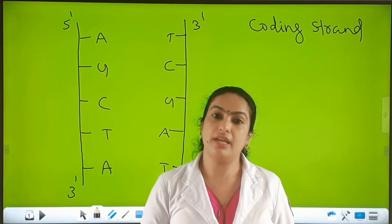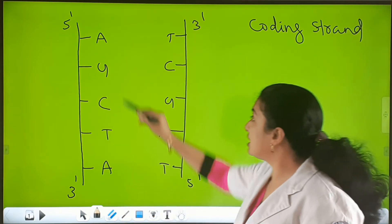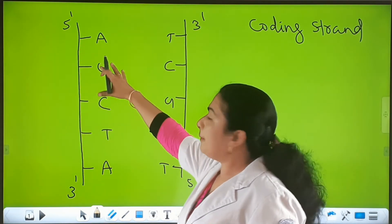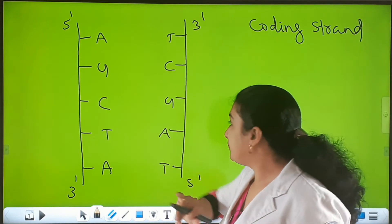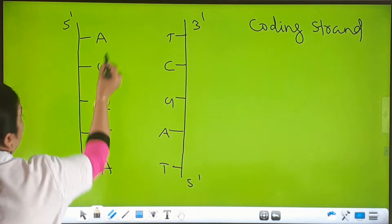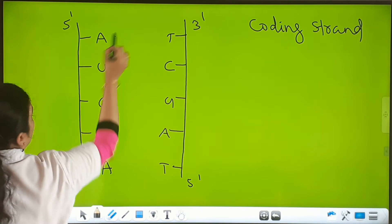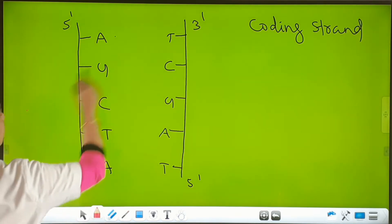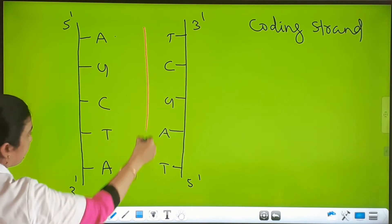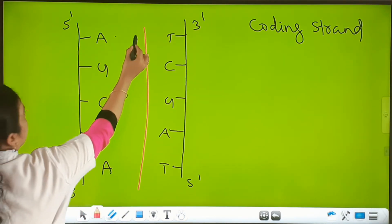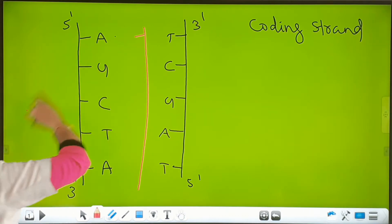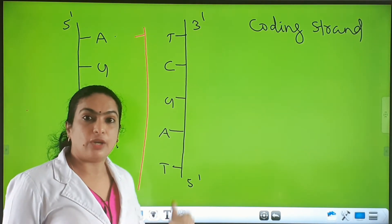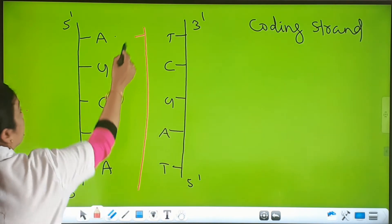The strand which takes part in the transcription process is called the template strand. The mRNA formed from the template strand has nucleotides complementary to it. For adenine on the template strand, the RNA pairs with uracil instead of thymine, because this is RNA — uracil replaces thymine.